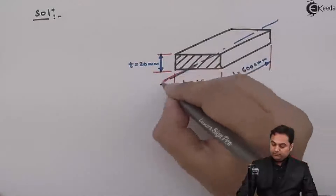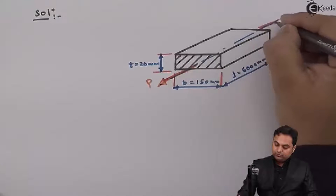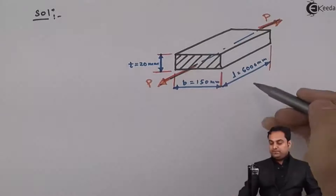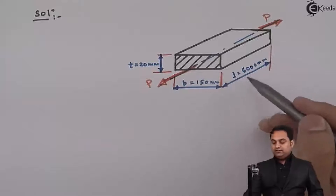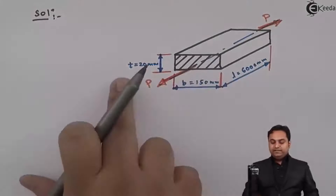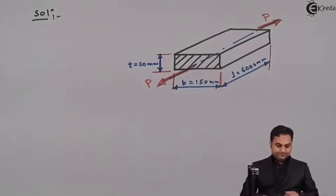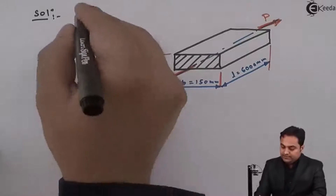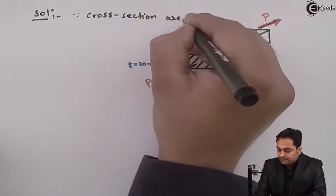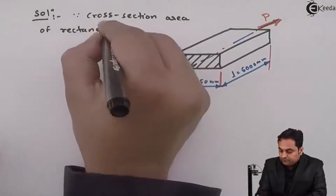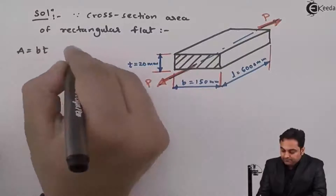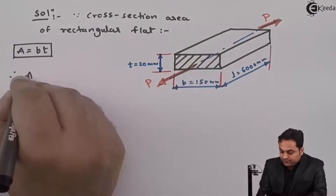Because of this pulling action, the load is parallel to the length. Along the length there will be linear strain — length will increase — and the other two dimensions B and T will decrease, so for B and T we will use lateral strain. Since the cross-section is rectangular, area A = B × T.